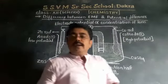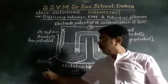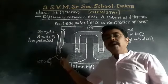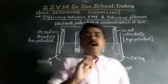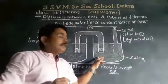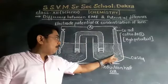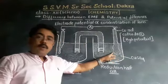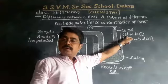When zinc sulfate dissociates, it will provide Zn²⁺ ions. In another half cell, we have taken a copper rod — the copper electrode, which is the cathode.